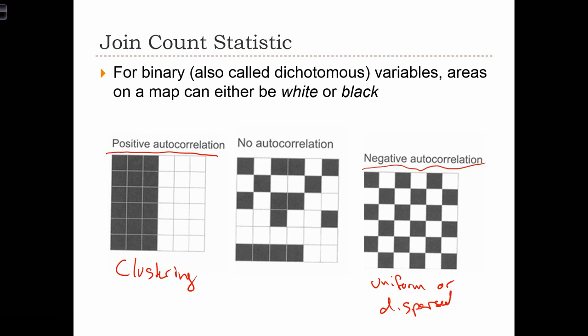So we have like a checkerboard in this case. And in no autocorrelation, that's a map pattern that is random. And we're going to have a join count statistic that's going to be able to look at these map patterns. The statistic is going to indicate whether or not we have clustering, randomness, or uniform or dispersed distributions.